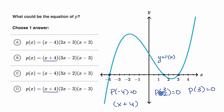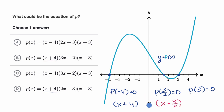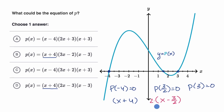Now for this second root, we have p of three halves is equal to zero. So I would look for something like x minus three halves in our product. I don't see an x minus three halves here, but as we've mentioned in other videos, you can also multiply these times constants. To get rid of this fraction, if I multiply by two, this would be the same thing as two x minus three. Two x minus three is equal to zero when x is equal to three halves.